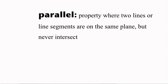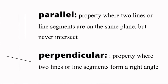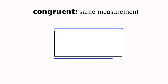Thank you, Trent. Of course, the prefix quad means four, so quadrilateral is a four-sided polygon. Parallel is the property where two lines or line segments are on the same plane, but never intersect. Perpendicular describes two lines or line segments that form a 90-degree or right angle. Congruent means same measurement. Congruent sides are the same length.